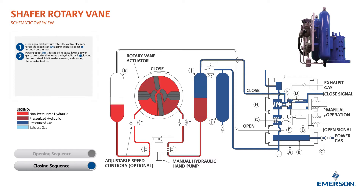This allows power gas to pressurize the closing gas hydraulic tank, forcing the pressurized fluid into the actuator and causing the actuator to close. The fluid displaced from the actuator flows into the opening gas hydraulic tank, which is open to atmosphere through the exhaust check valve in the poppet block.